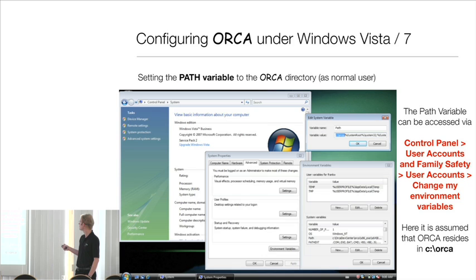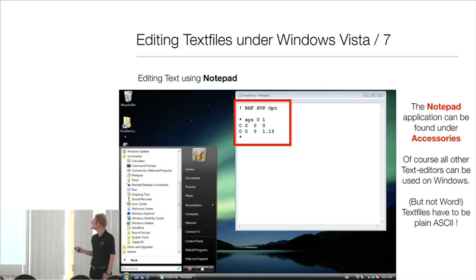This way has the disadvantage that you have to have system administrator rights. There's another way, slightly different. If you enter control panel, user accounts and family safety, user accounts again, and then change my environment variables, this can be done by every user on all systems. But the setting of the path variable here is called path again, and here you put in the ORCA path. You click OK, then you have to log out and log in again. Then the computer should know where ORCA resides.